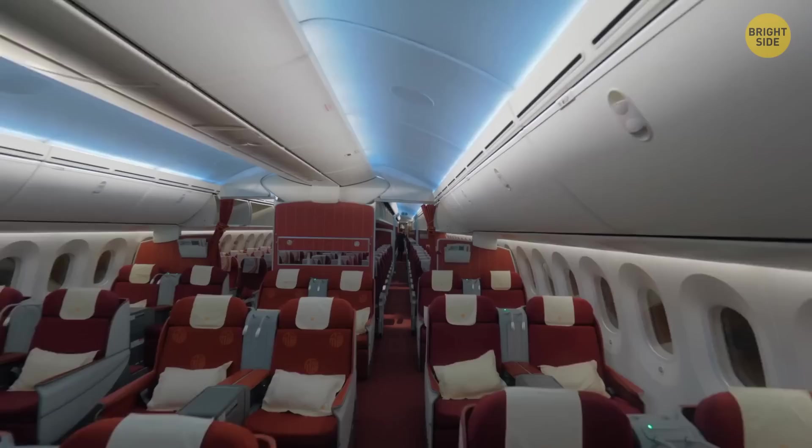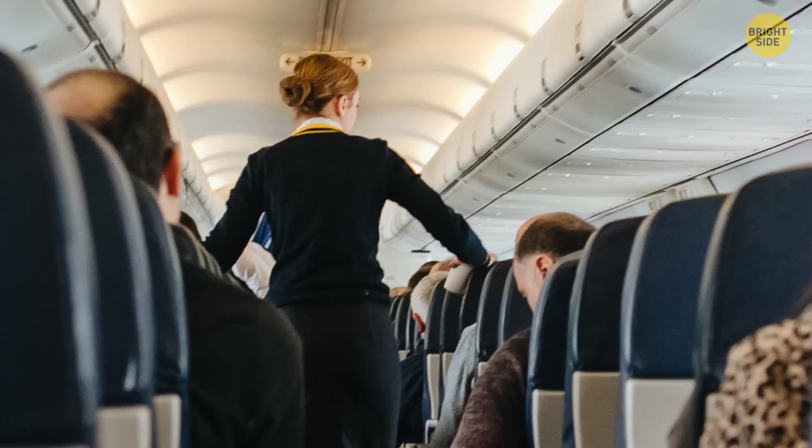You may have noticed that members of the flight crew like to touch the overhead compartments while they're walking down the aisle. They don't have a weird desire to touch everything. There are actually handles along the edges to give them a better grip while walking. Go ahead and use them the next time you feel like a mid-air stroll. It's definitely better than grabbing onto everyone's headrests.